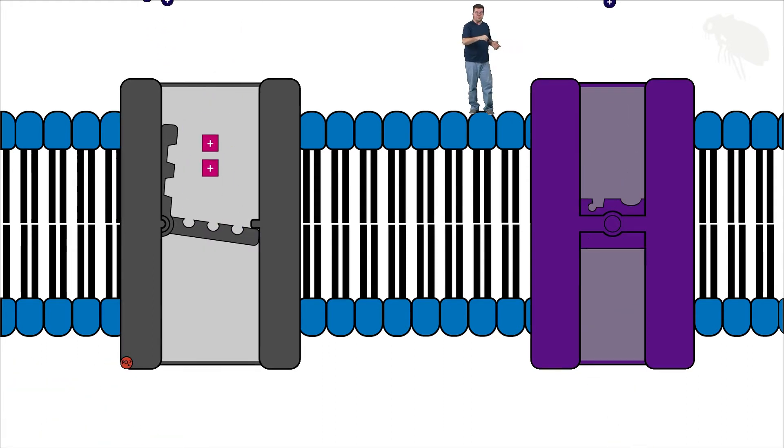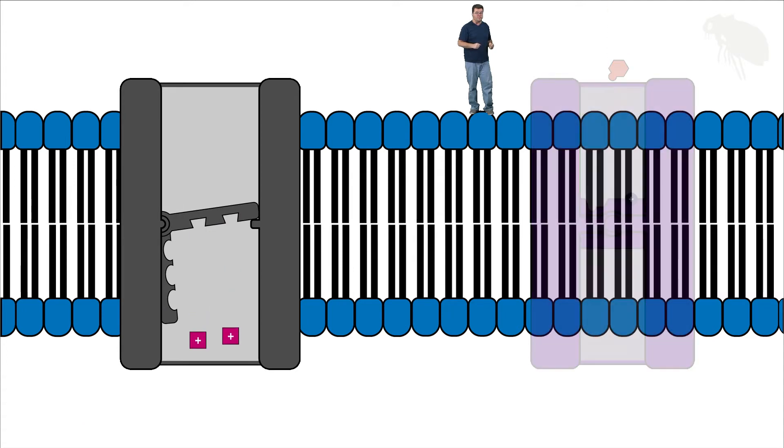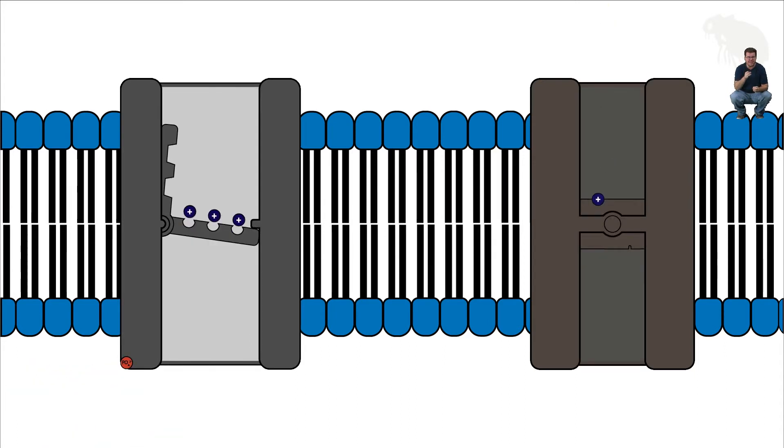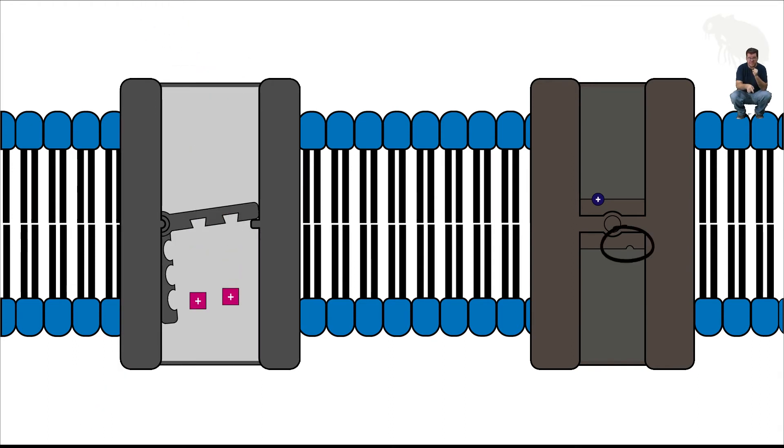There's another way this process can work though. If you noticed, I just changed this protein. It's no longer a sodium glucose symport - it's now a sodium hydrogen ion antiport. It now is going to do exactly what the symport did, but with the catch that instead of sodium and glucose binding on the same side of the membrane, the binding site for the proton, the hydrogen ion, is on the opposite side of the membrane.